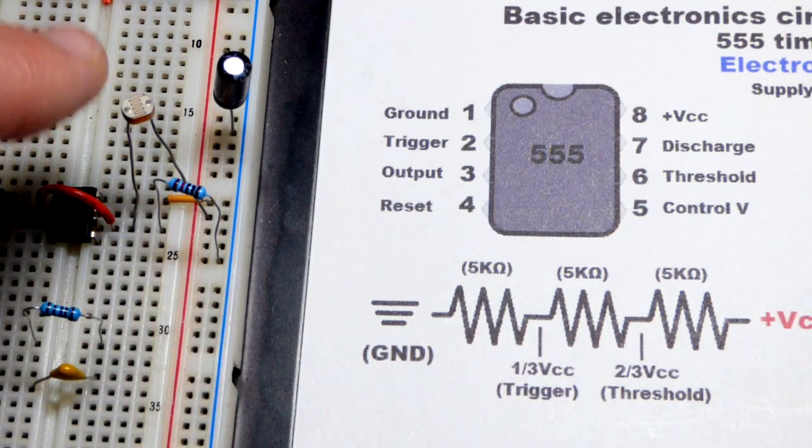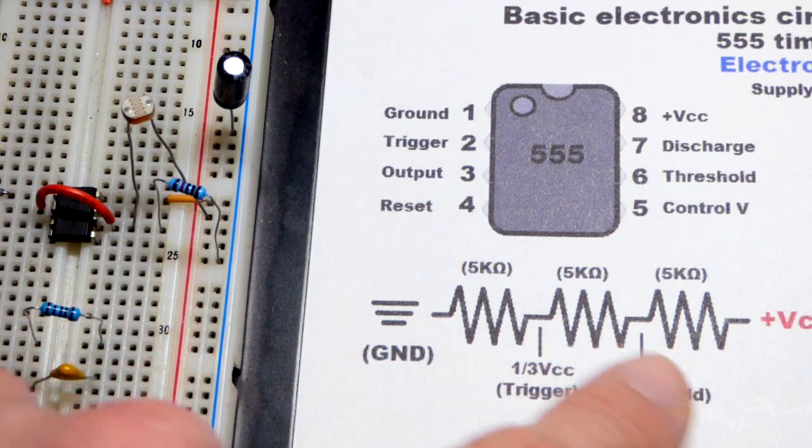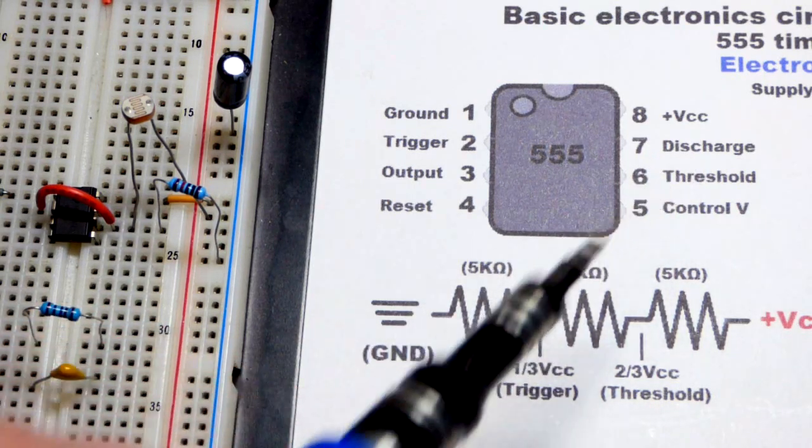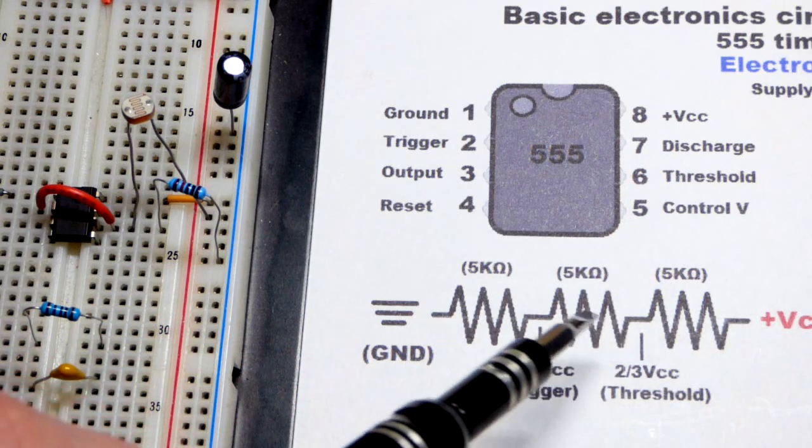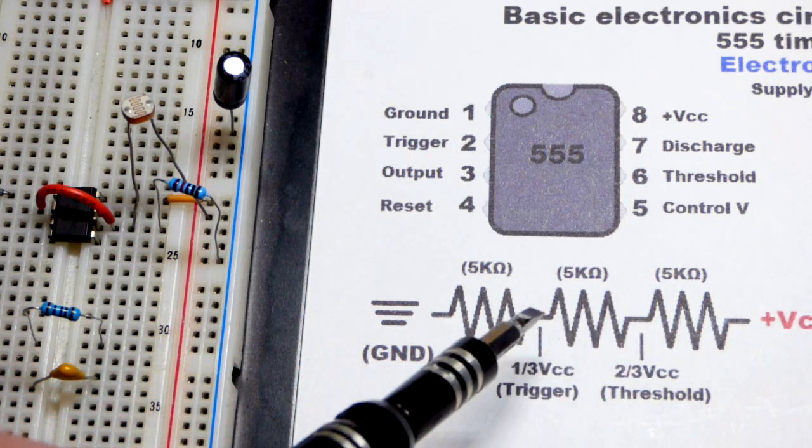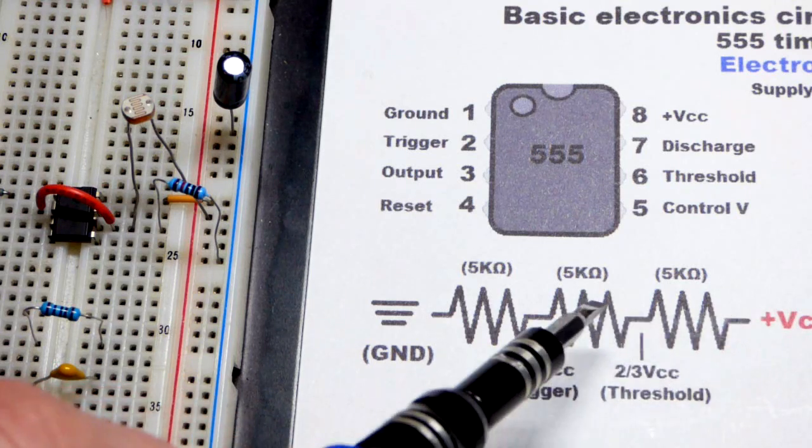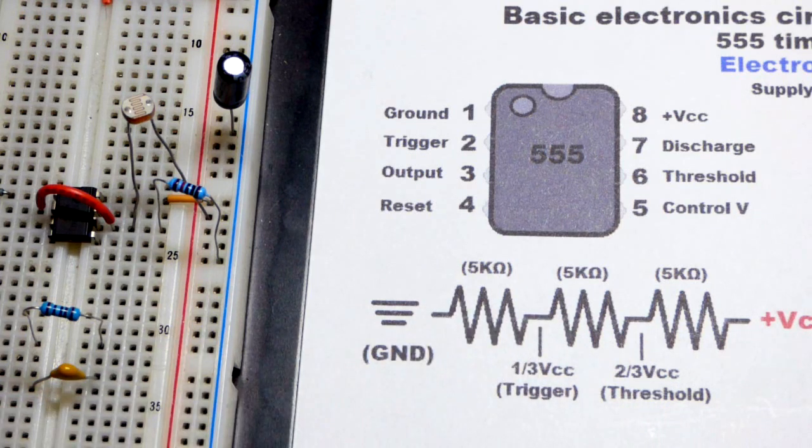If we lower the resistance by putting more light on it, we get up to the two-thirds or higher. That's when the threshold kicks in. That sets the output low once we cross that two-thirds. Then we have to make it all the way back to one-third to set it back. That's why there's hysteresis. Once we cross this line, we have all this room we can go.